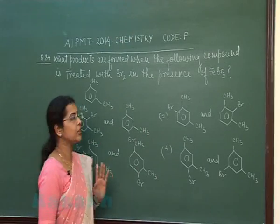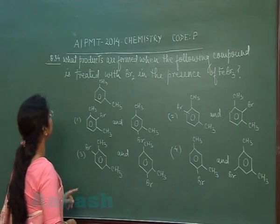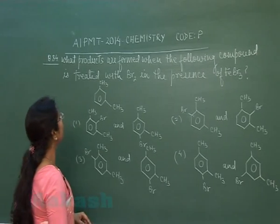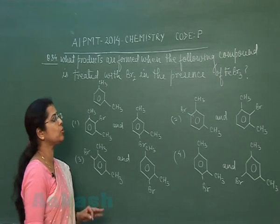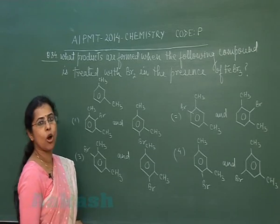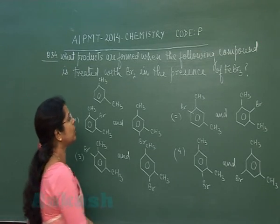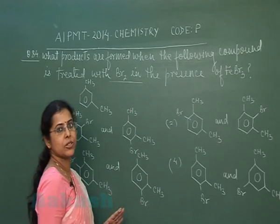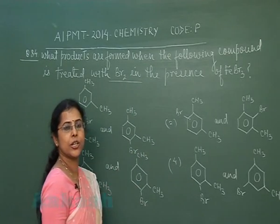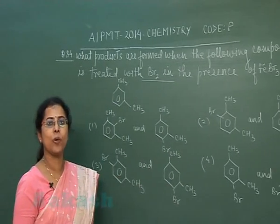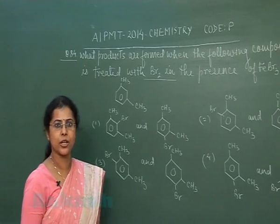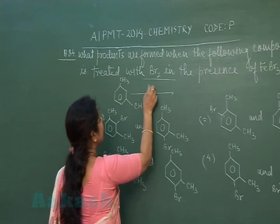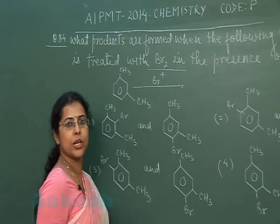Now look at the next question, which is question number 84. What products are formed when the following compound is treated with bromine in the presence of FeBr₃? The language of the question strictly implies that the given reaction is an electrophilic aromatic substitution reaction, and in this reaction the electrophile is the bromonium ion.